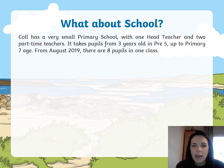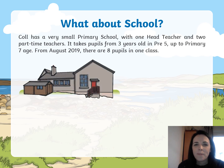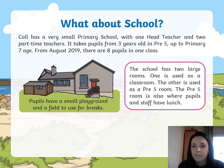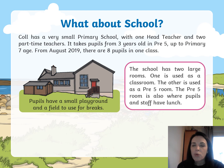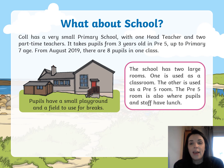From August 2019, there were eight pupils in one class. They've got a very small playground and a field to use for their break times. The school has two large rooms: one is a classroom and the other is used as a pre-five room for children less than five years old, like nursery children. All the other children are in together, and this pre-five room is also where pupils and staff have their lunch.